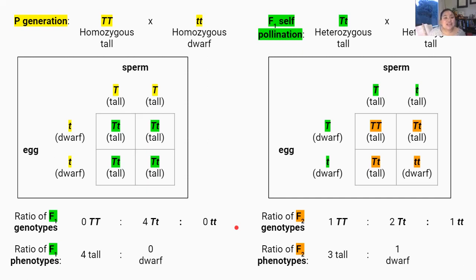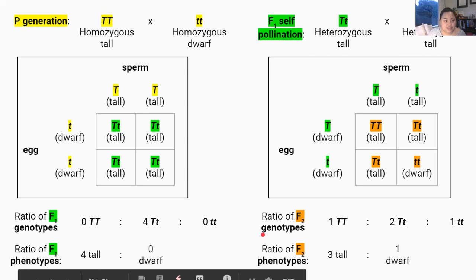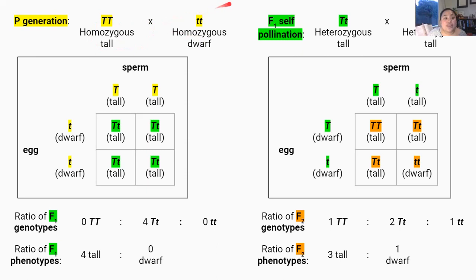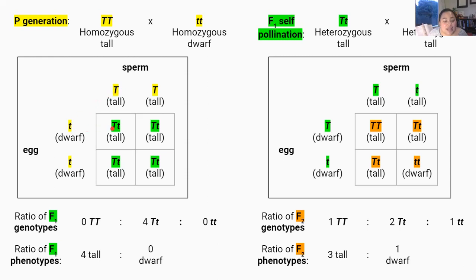To study pea plant height, let's look at three generations of monohybrid crosses. In the parental generation, a tall pea plant is crossed with a dwarf pea plant. The tall plant is homozygous dominant, so big T segregates into all its gametes. The dwarf plant is homozygous recessive, so small t segregates into all its gametes. When big T and little t combine during fertilization, all the F1 generation offspring get the heterozygous genotype big T, little t.